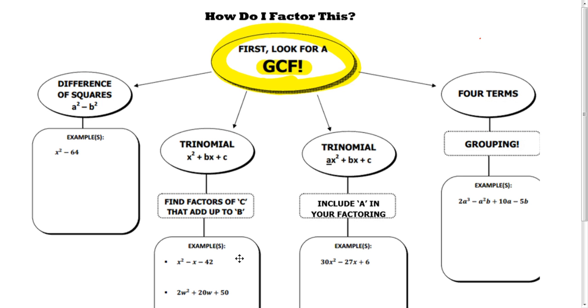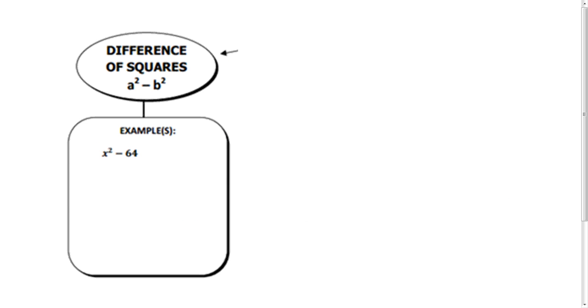Starting over here on the left, the difference of perfect squares is where you have just two terms squared. The first thing that should tip you off is that it's a binomial. Difference means subtract or minus, and perfect square is where, like here, that's x squared and this is 8 squared. When you do this, the difference of perfect squares is going to equal, in this case, x minus 8 and x plus 8.